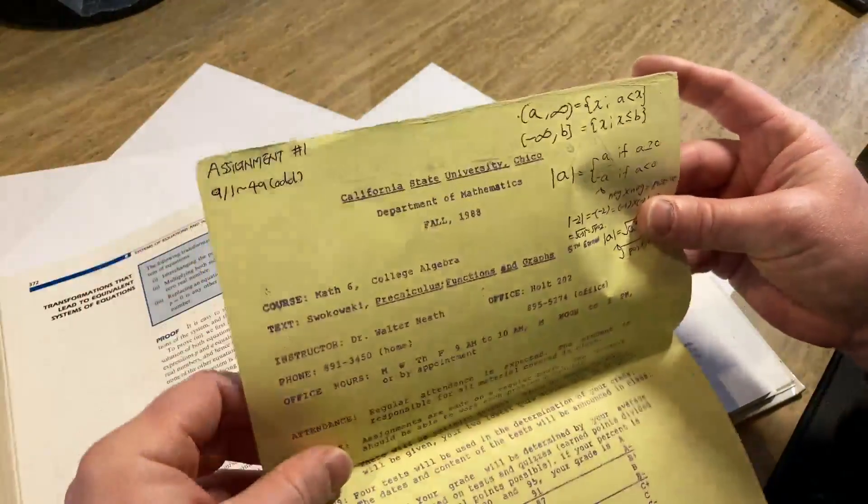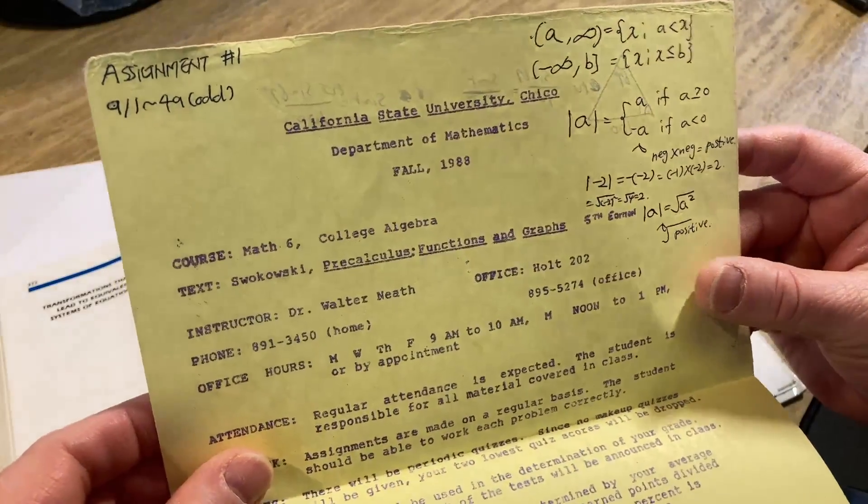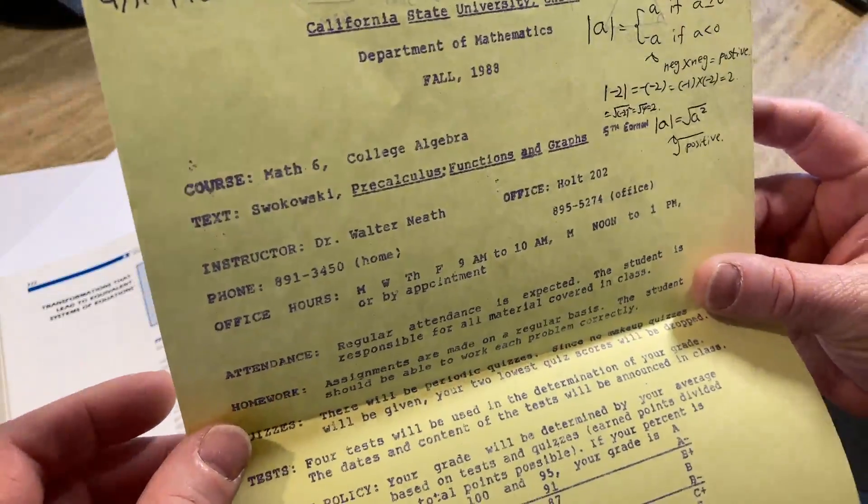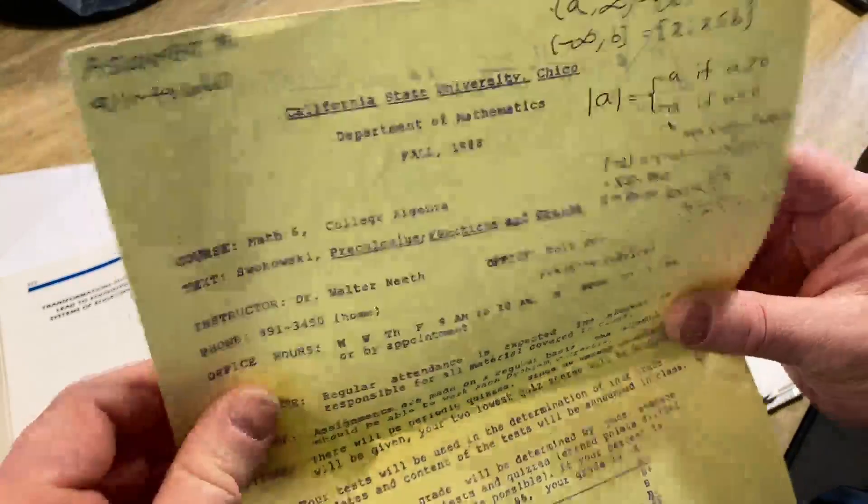Looks like we've got an assignment here. California State University Chico Department of Mathematics Fall 1988. That's cool. So it's an old syllabus, right? Oh, look at this.